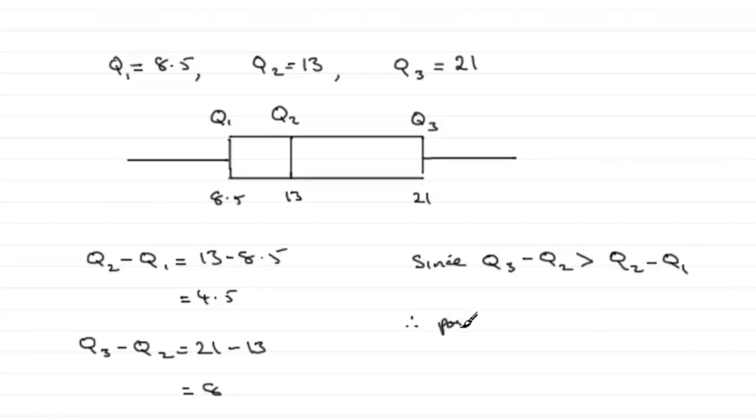If this width was smaller than this width, then it would be negative skew when you've got other examples. But in this case you've got positive skew.